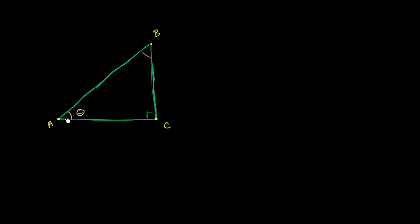The sum of the angles of a triangle is 180 degrees. And this is a right triangle, so this right angle takes up 90 of those 180 degrees. You have 90 degrees left, so these two angles are going to have to add up to 90 degrees. Angle A and angle B are going to be complements of each other — they're going to be complementary.